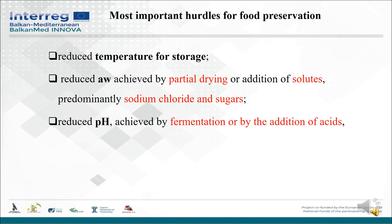The most important hurdles for food preservation include three major microorganism growth-inhibitory hurdles. The first is reduced temperature for storage. The second is reduced water activity, which can be achieved by partial drying or by addition of solutes like sodium chloride or sugars. The third is reduced pH, which can be achieved by fermentation or by addition of acids. Also, one major microorganism inactivation hurdle can be mild heat treatment, like pasteurization.